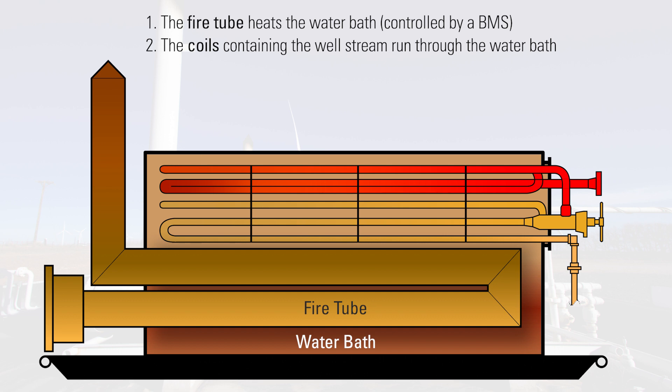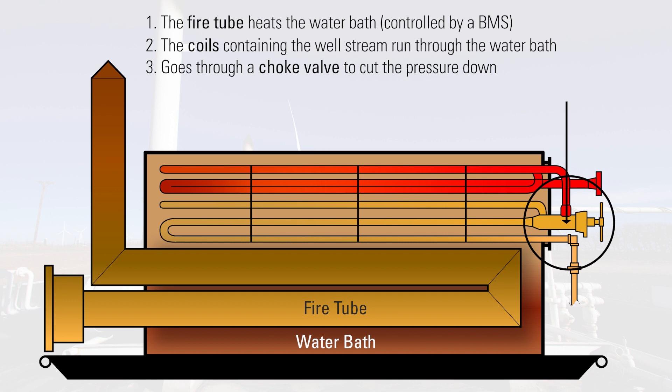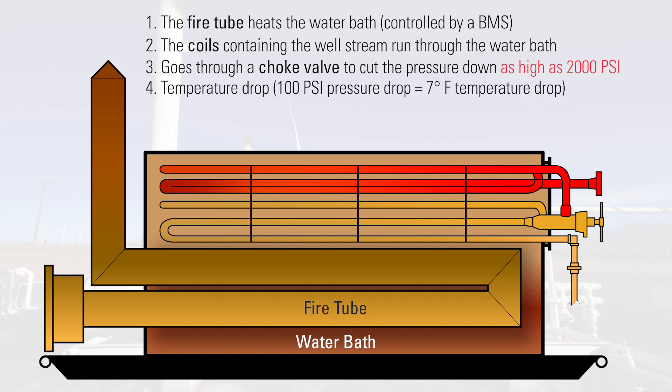After the well stream is preheated through the first set of coils, it goes through the choke valve that cuts down the pressure to at least the maximum working pressure of the separator. This pressure cut can be as high as 2,000 psi. With this pressure cut, there will be a temperature drop — for every 100 psi pressure drop, there will be a temperature drop of 7 degrees.